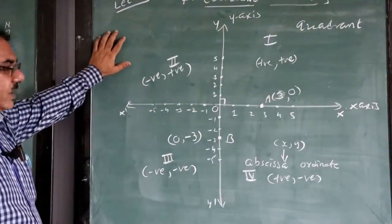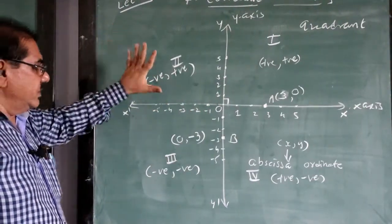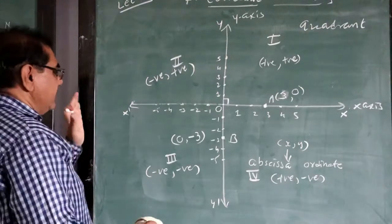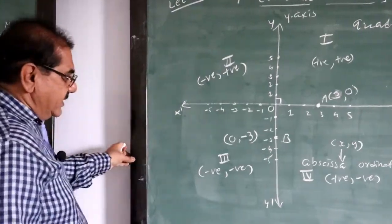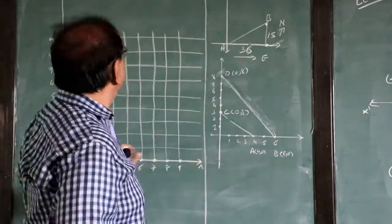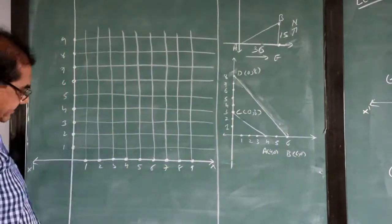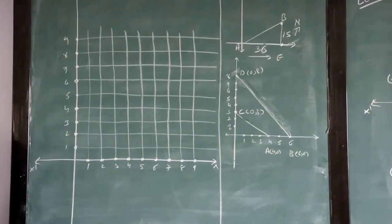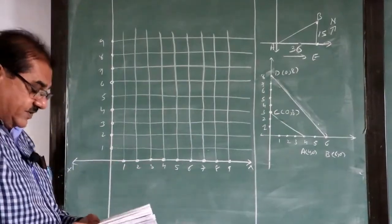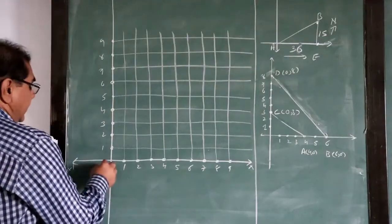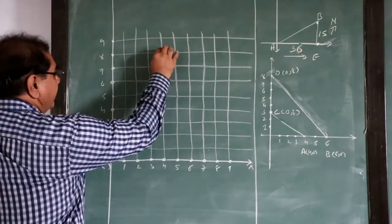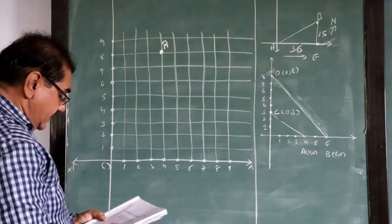These are all things we have learned in standard 9. Knowing this, we do an exercise — an activity — by which we plot given points on the graph paper. Here I take you to a graph paper. We have to plot certain points and find out what figure is generated. I take the activity from the textbook — on the very first page. Point A is at (4, 8).